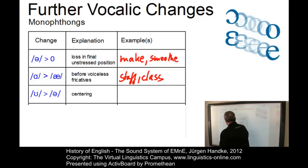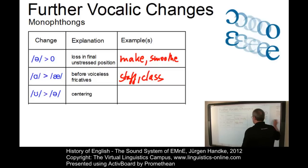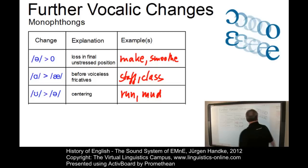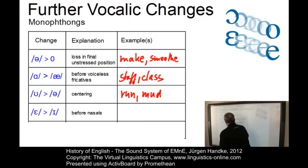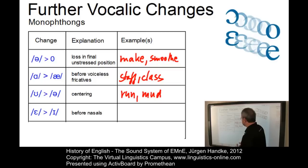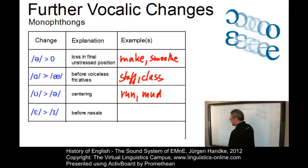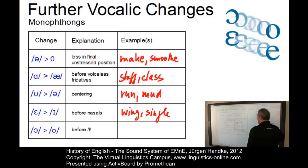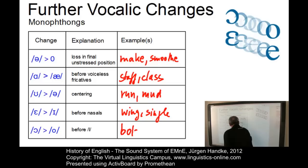The third change is the centering of a mid-high vowel to schwa, affecting examples such as 'run' and 'mud'. A fourth monophthongal change occurred before nasals, where the mid-low front vowel changed to a mid-high front vowel — examples include 'wing' and 'single', where the vowel was lower before this change. The fifth monophthongal change is the raising of /o/ to /oː/ in words such as 'bold' and 'cold'.